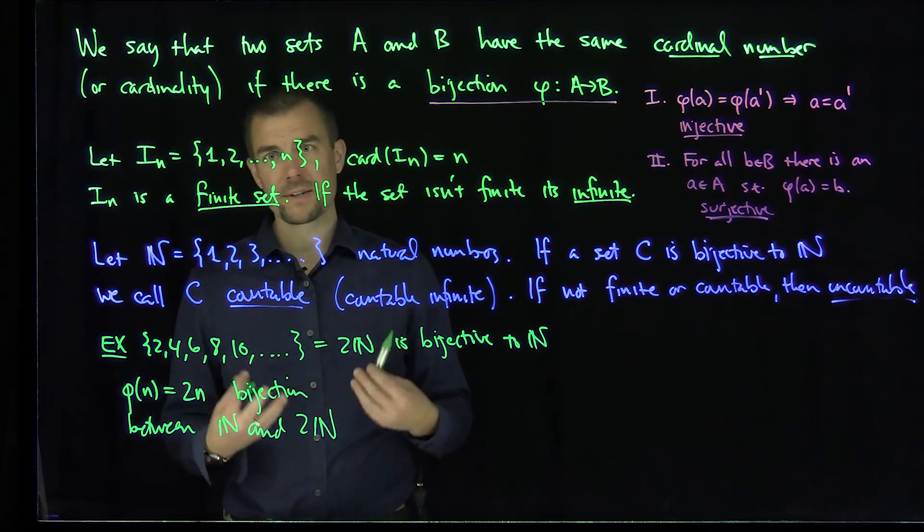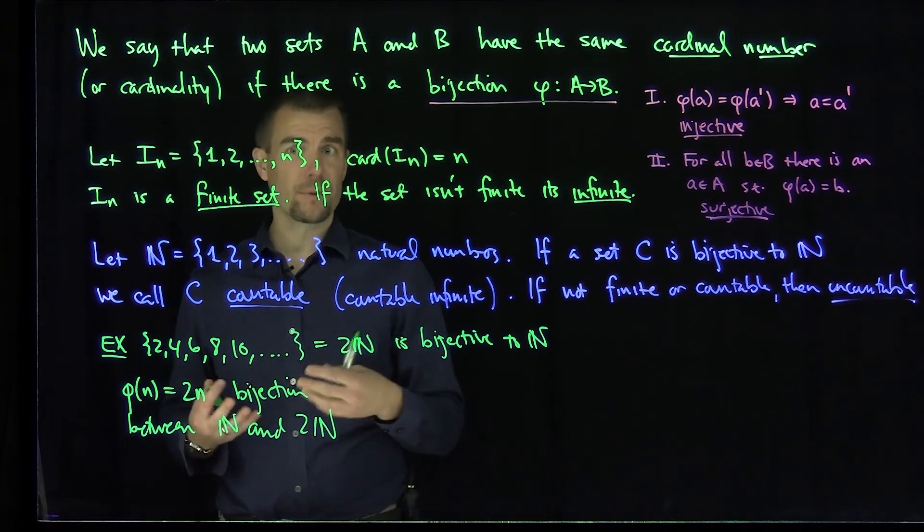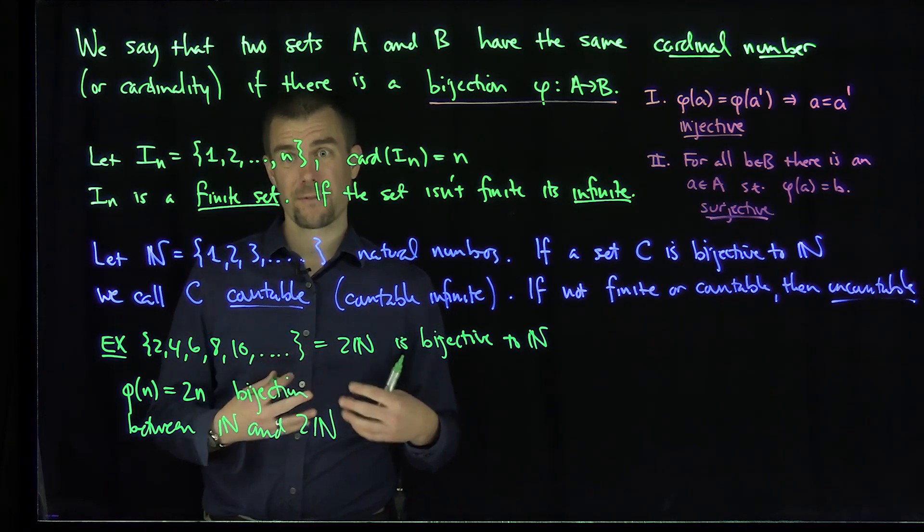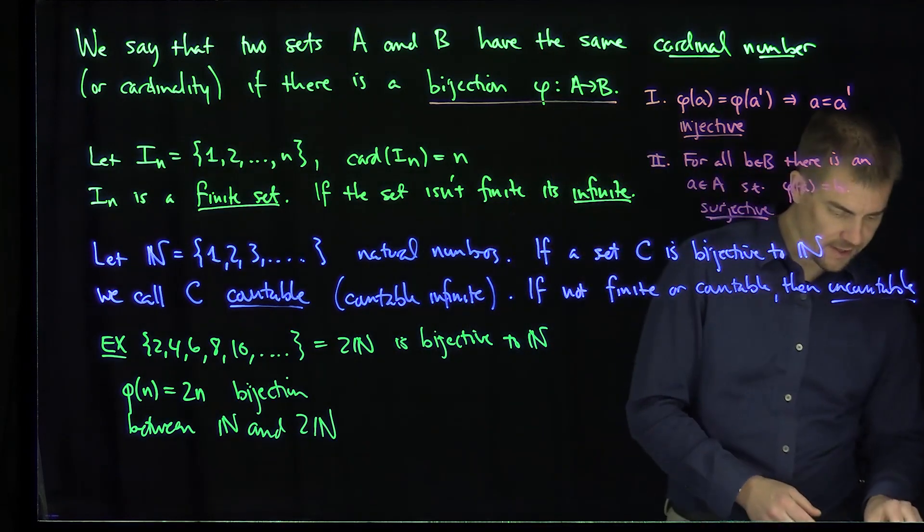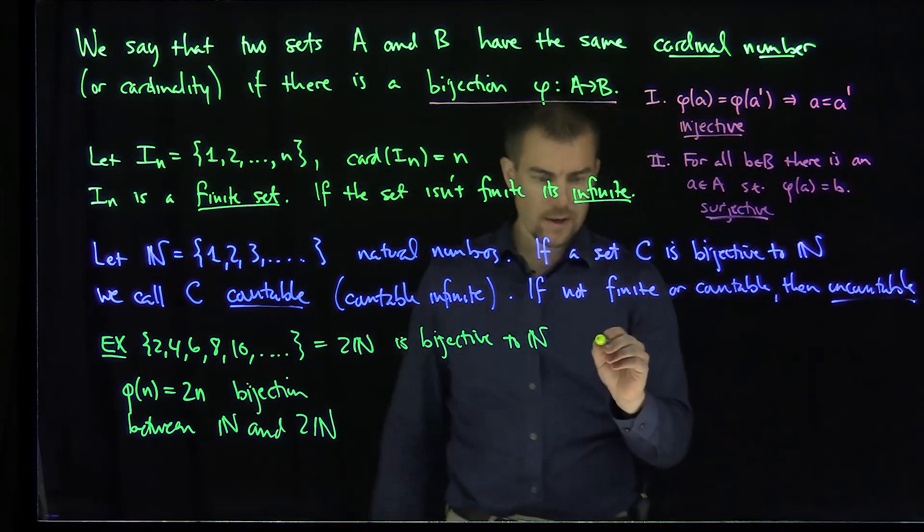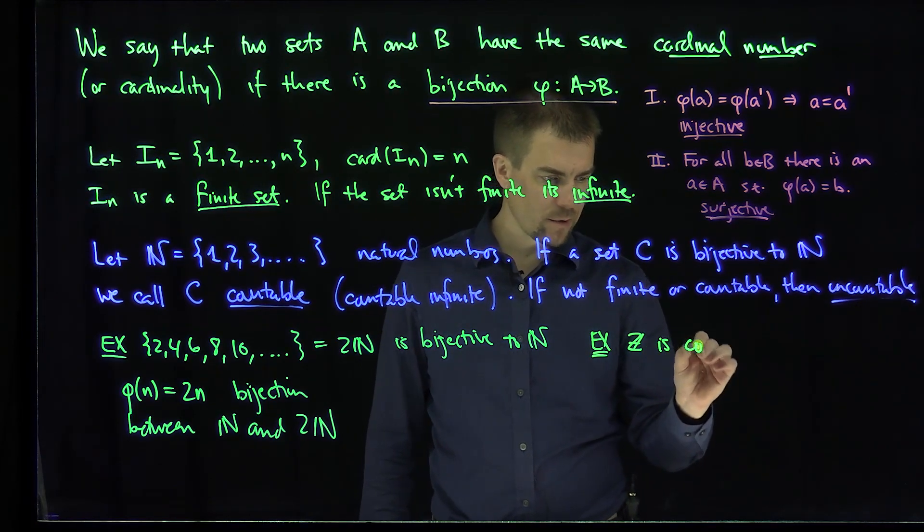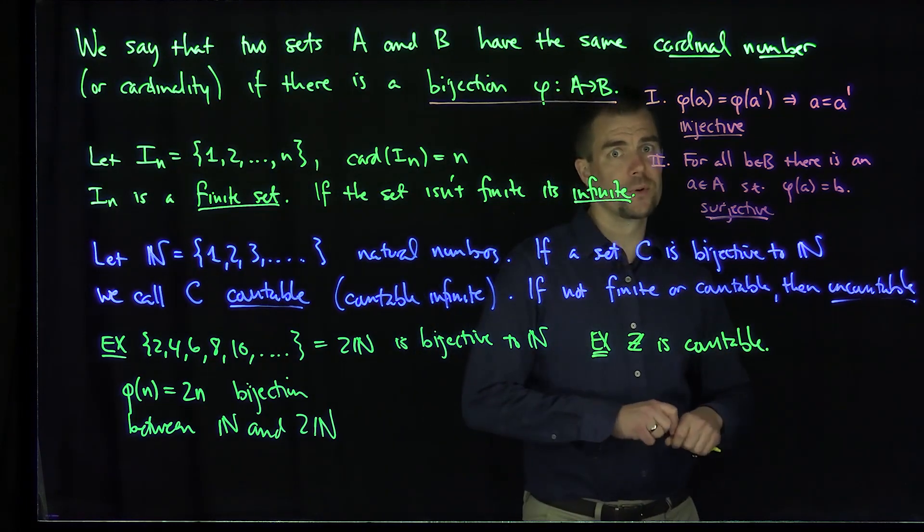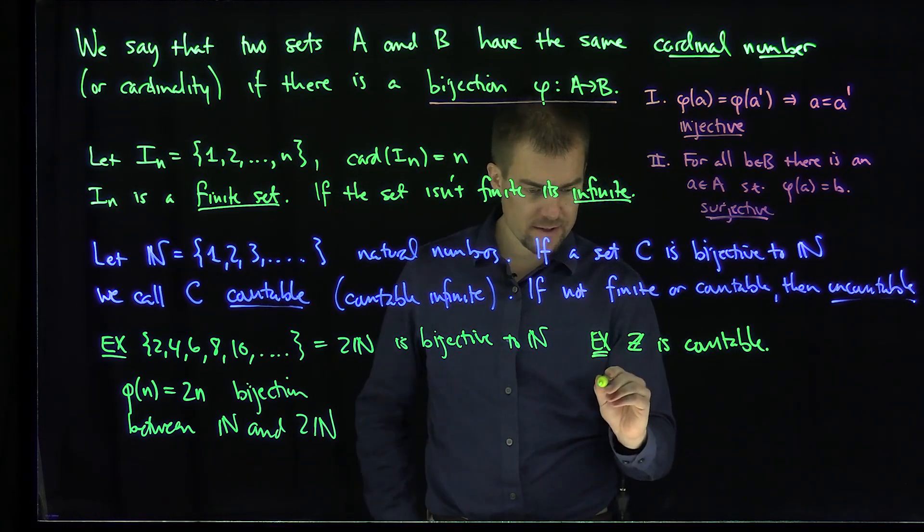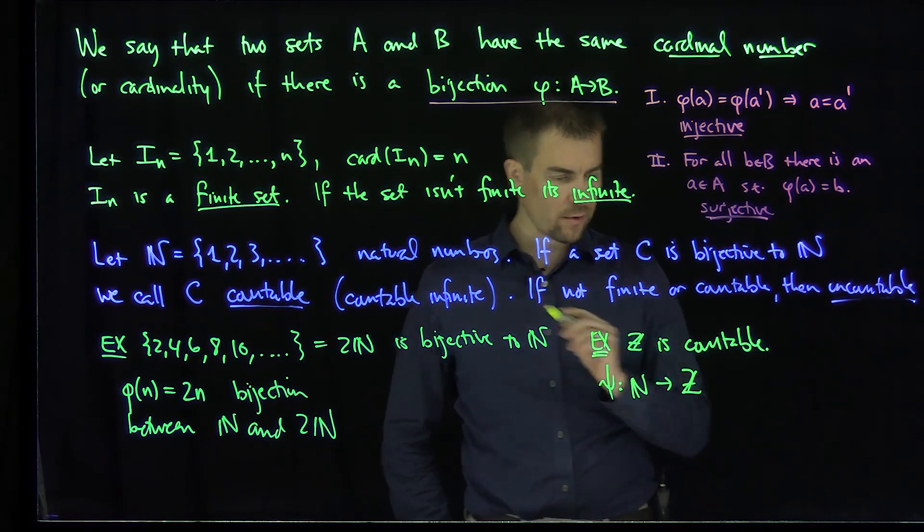Likewise, 3N is countable, 4N is countable, 5N is countable. The set of primes is countable. Any subset of a countable set is also itself countable. A more interesting example is the set of integers. Z is countable. What we can do is find a mapping psi which maps N into Z as a bijection.